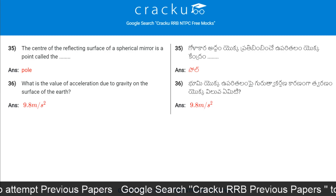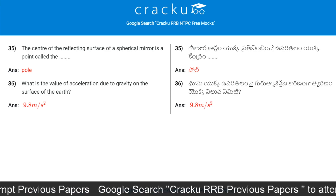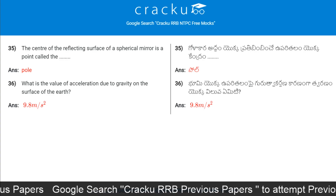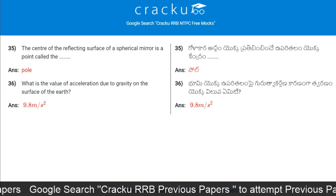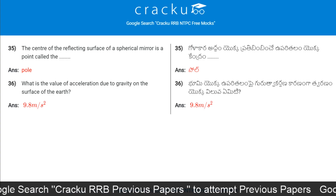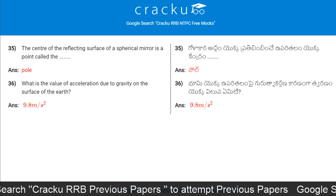What is the value of acceleration due to gravity on the surface of the earth? 9.8 meters per second squared.